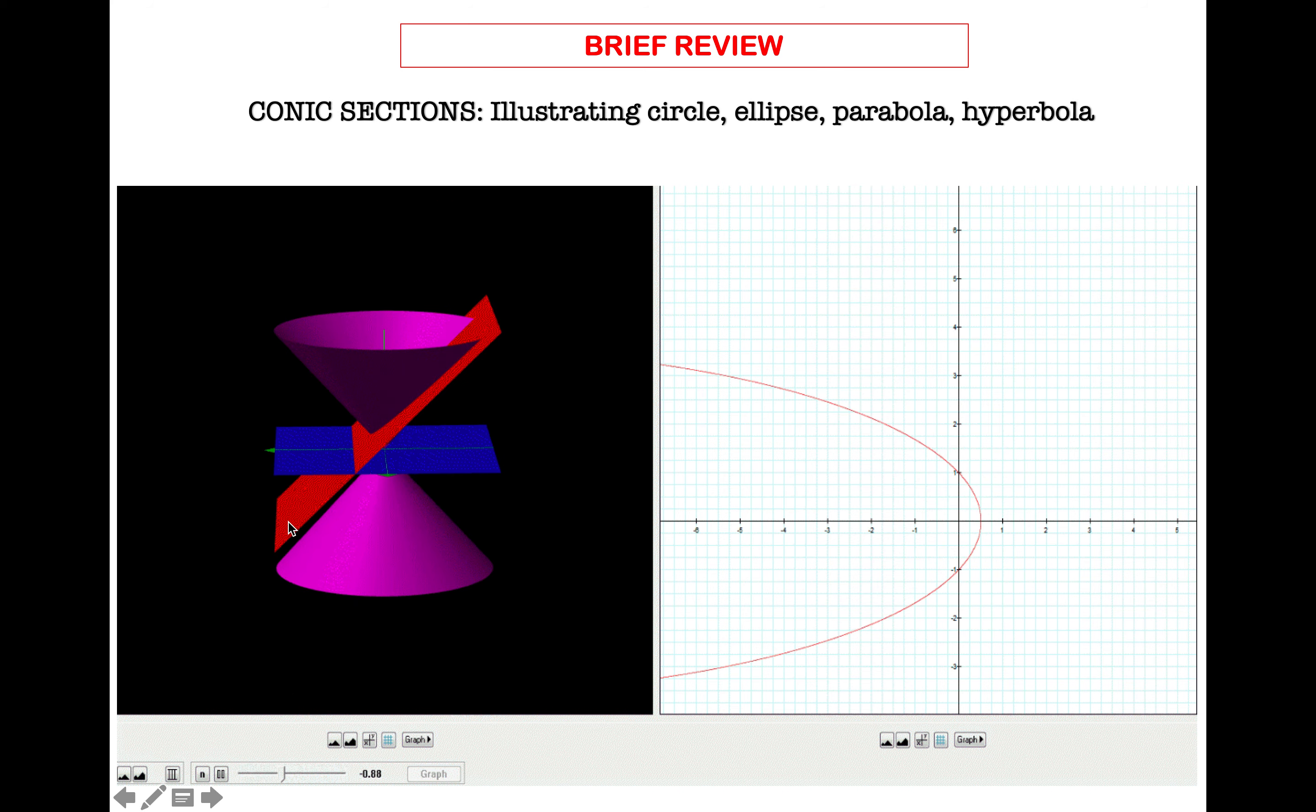On the previous discussion, how were they generated? So this time, our view is not on the cone, but our view is on the cutting plane. So when the cutting plane intersects the nap or naps of the right circular cone, these are the images that are created or generated. So we'll focus on the graph.